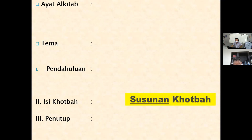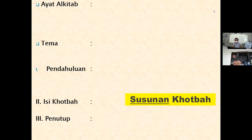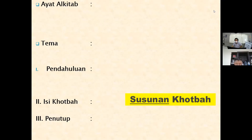Mister mau tanya Jovan — ayatmu apa? Yeremia 29 ayat 11. Gimana bunyinya? 'Sebab Aku ini mengetahui rancangan-rancangan apa yang ada pada-Ku mengenai kamu, demikianlah firman Tuhan, yaitu rancangan damai sejahtera dan bukan rancangan kecelakaan, untuk memberikan kepadamu hari depan yang penuh harapan.' Wah bagus sekali ayat itu — itu janji Tuhan yang bagus sekali.